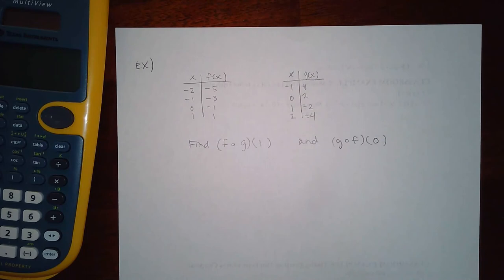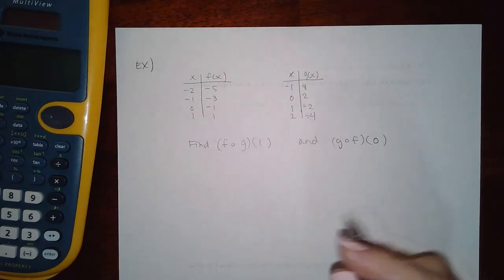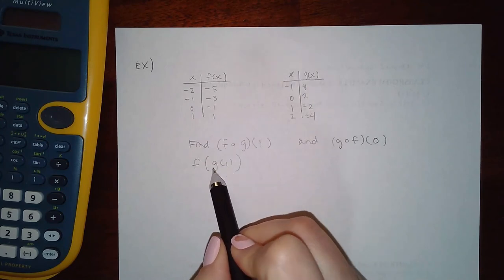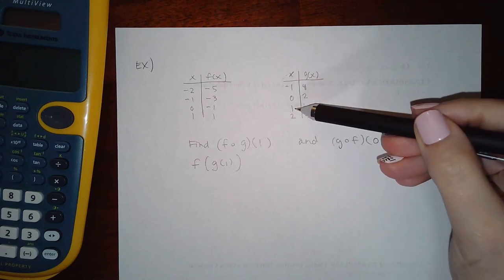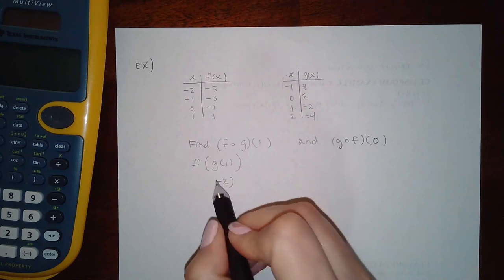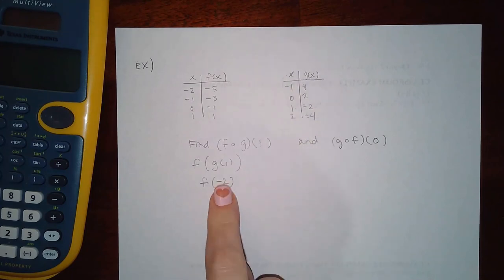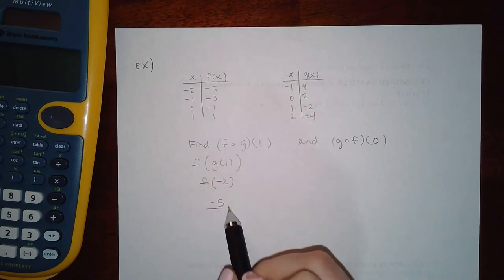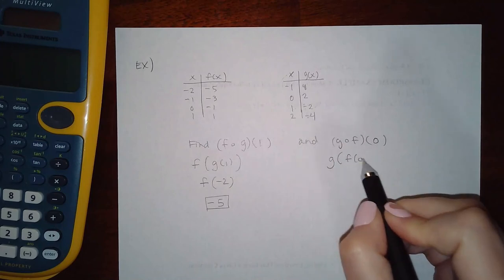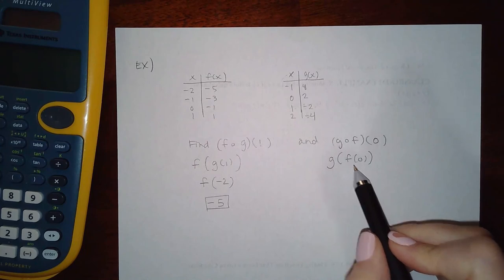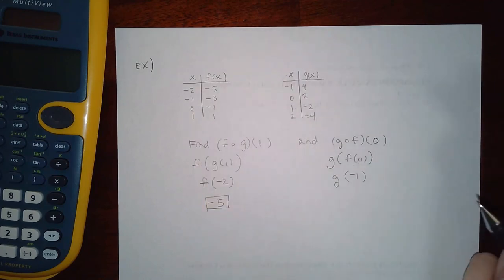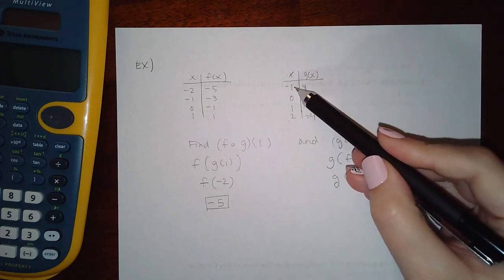There's also a composition problem given with charts. For f(g(1)): f is on the outside, g is on the inside with x = 1. Look at the g table — at x = 1, g(1) = -2. Now find f(-2) from the f table — that gives -5. For g(f(0)): work on the inside first, so look at the f table — at x = 0, f(0) = -1. Then find g(-1) from the g table — at x = -1, g = 4.